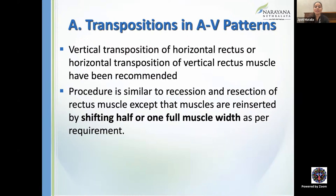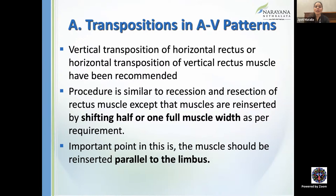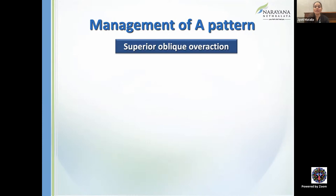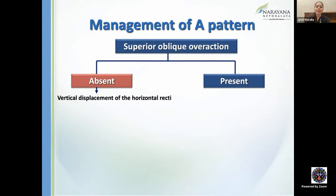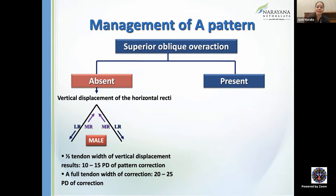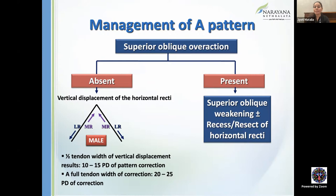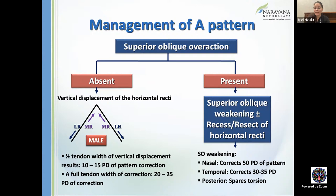For A-pattern management, if oblique overaction is absent, use vertical displacement of horizontal recti following the mnemonic MALE — medial rectus shifted to the apex, lateral rectus downwards. A half tendon width gives 10–15 prism diopters of correction; a full tendon width gives 20–25 prism diopters. If superior oblique overaction is present, add superior oblique weakening with horizontal recti. More nasal weakening corrects about 15 PD of pattern; temporal weakening corrects 30–35 PD. Posterior fiber sparing preserves torsion when desired.